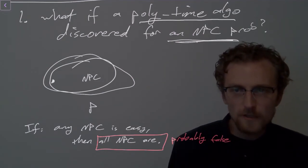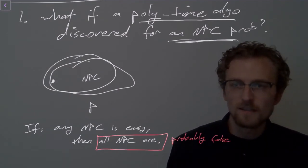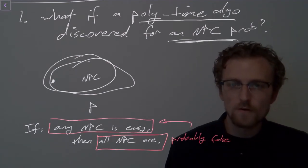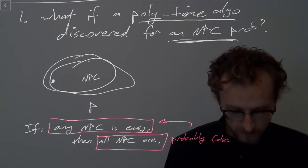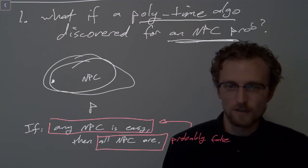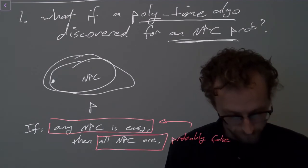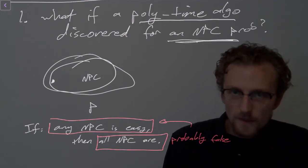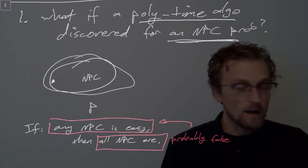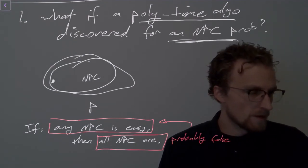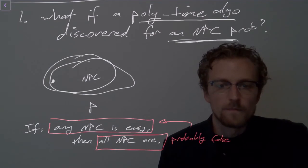What does it mean if the conclusion of an implication is false? It means the hypothesis is probably false as well. This implication is certainly a true implication — if the conclusion is false, then so is the hypothesis. So this is one kind of way that the conundrum could be resolved, but it seems to be an unlikely thing to happen. It's absolutely possible, but unlikely.